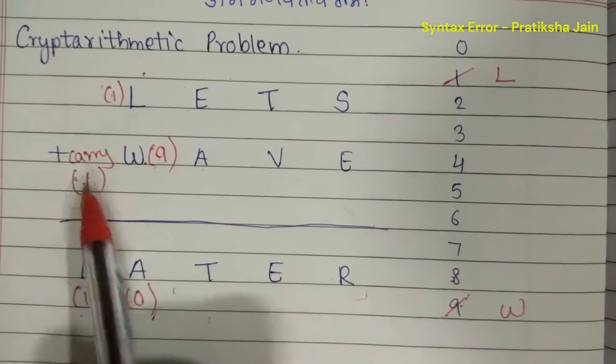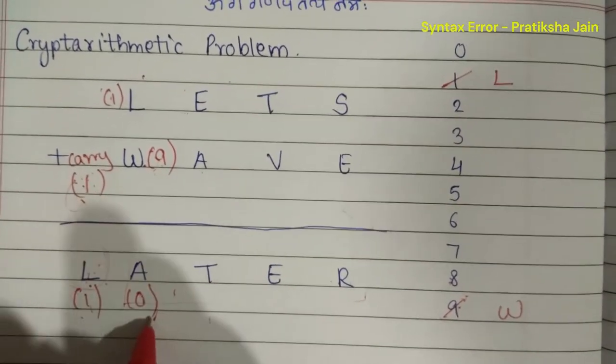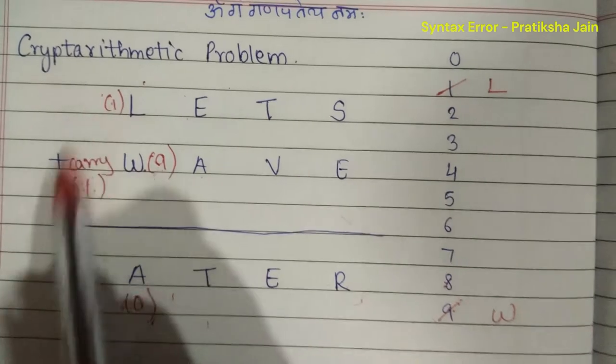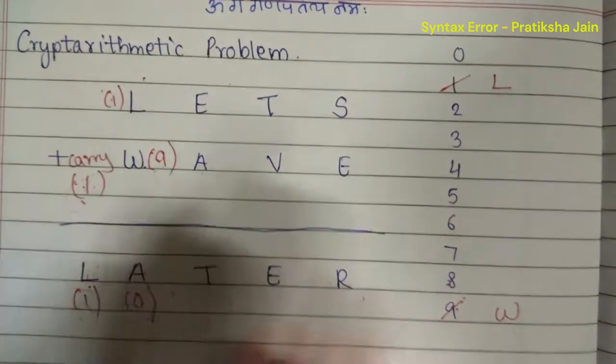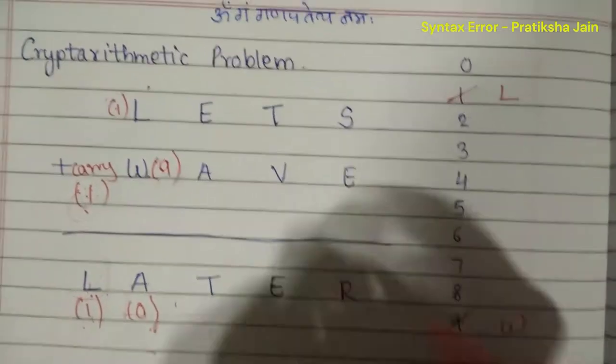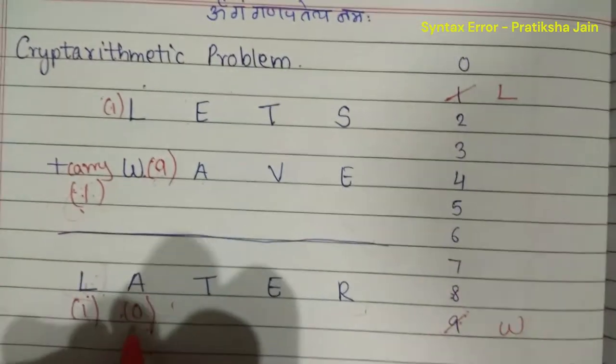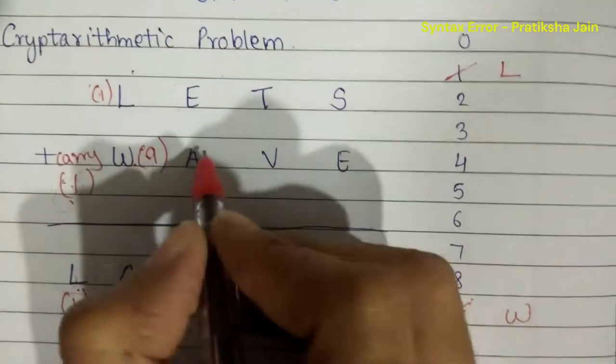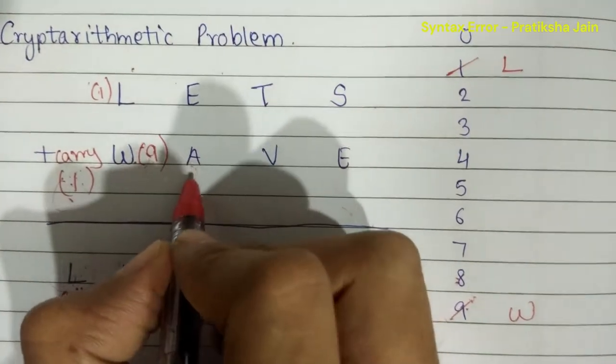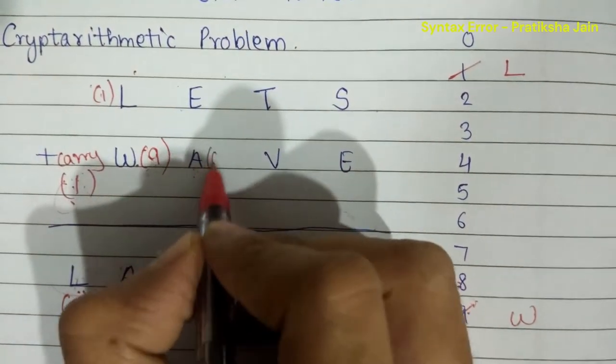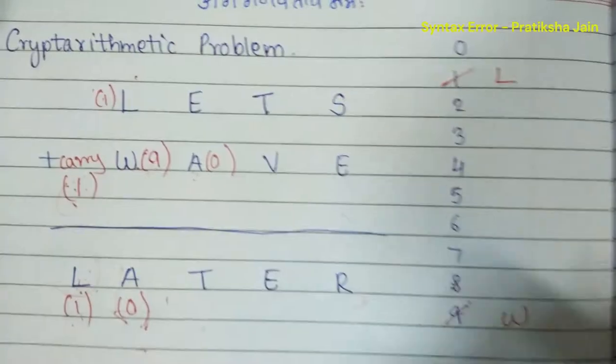We got our carry and zero. So till here we are correct. Now A is zero, so A becomes zero.